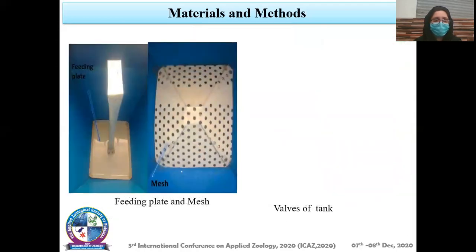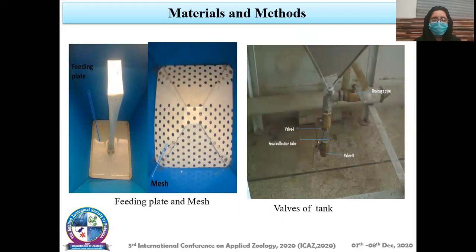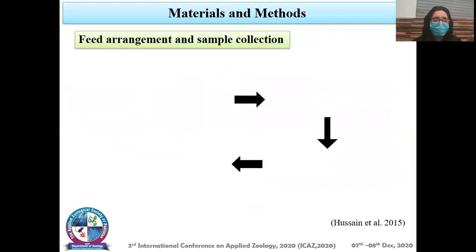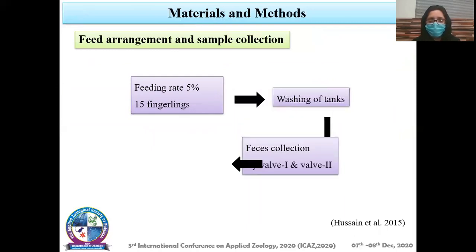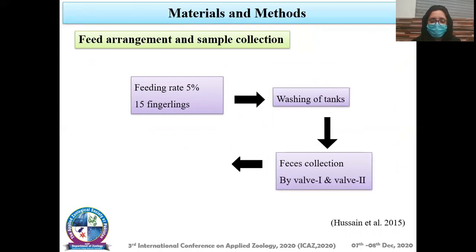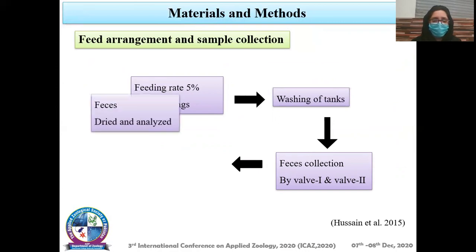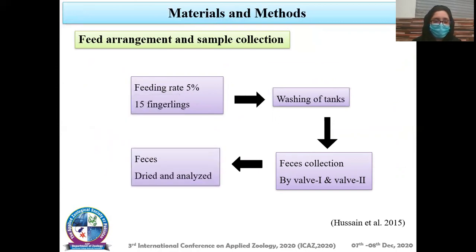This is the feeding plate and mesh. These are the valves of the tanks used for feed arrangement and sample collection. Fingerlings were fed at 5% of their live wet weight, and tanks were washed after feeding. After two hours of feeding, feces were collected by opening valves one and two. Fish samples were then dried in an oven at 60°C and stored for further analysis.